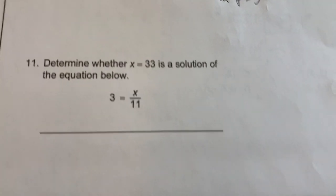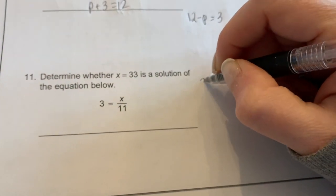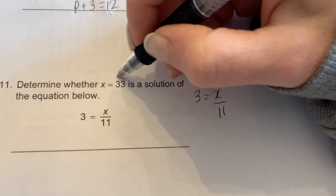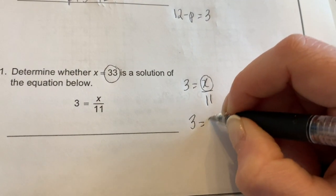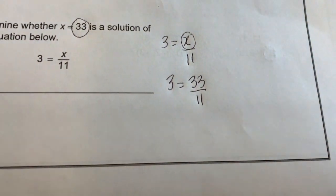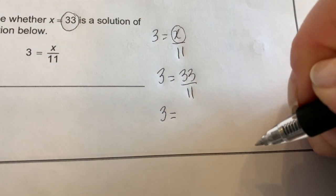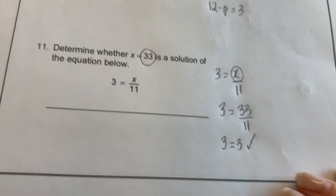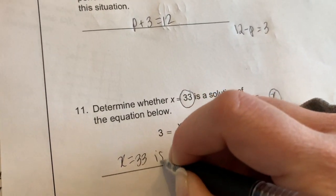Number eleven: determine whether x equals 33 is a solution to the equation. Plug it in! We have 3 equals x over 11, so plug in 33 wherever you see x: 3 equals 33 over 11. Think of that as division — 33 divided by 11 is 3, and since 3 equals 3, it is a solution. So x equals 33 is a solution.